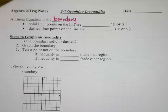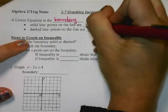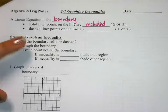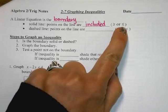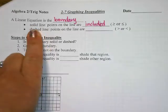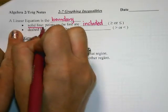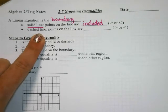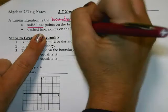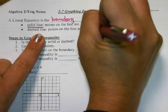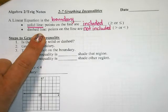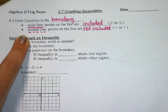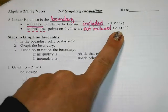We have a solid line if the points on the line are included, meaning it has the equal to with it. So if it's a greater than or equal to, or a less than or equal to, we're going to graph it with a solid line. It's a dashed line if the points on the line are not included. Think about when we had open and closed dots when we were graphing on a number line — this would be like an open dot. Those don't have the equal to with them.